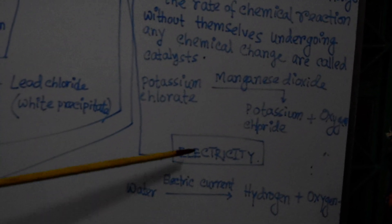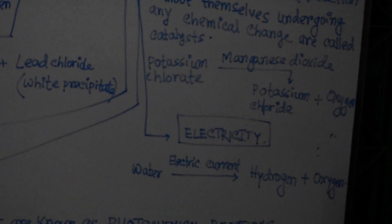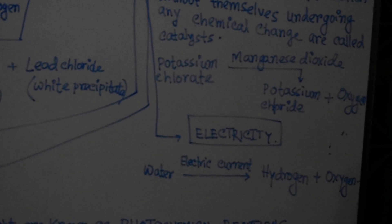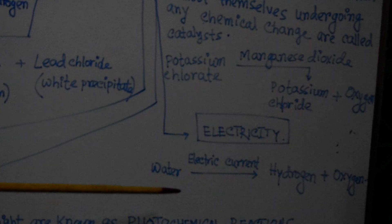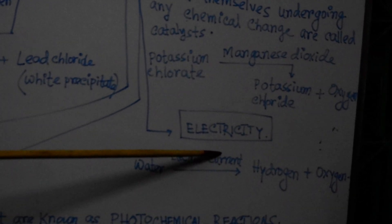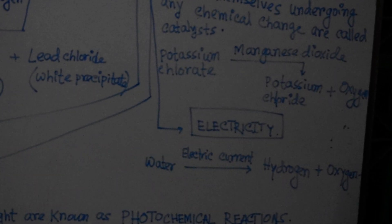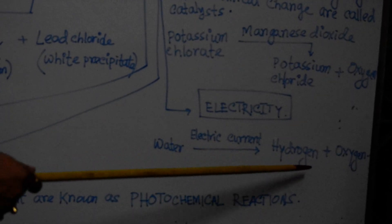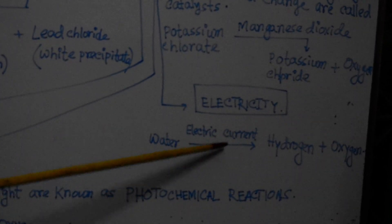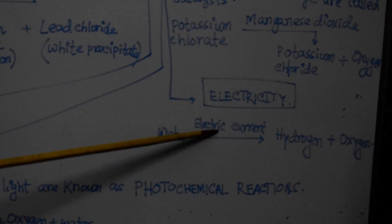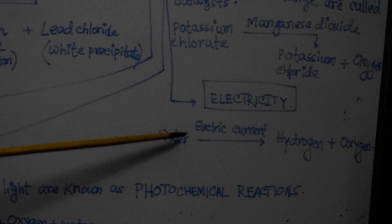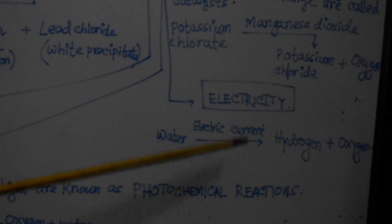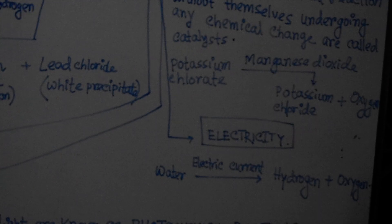The sixth and last condition is electricity. Some chemical reactions occur only when an electric current passes through the reactants. For example, water decomposes into hydrogen and oxygen only in the presence of an electric current — without it, water will not decompose. So electricity is another necessary condition for certain chemical reactions.